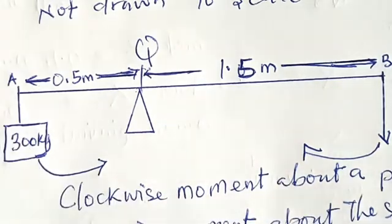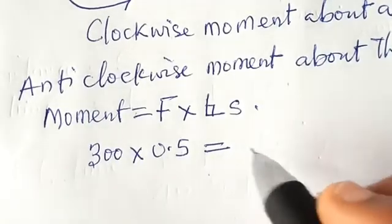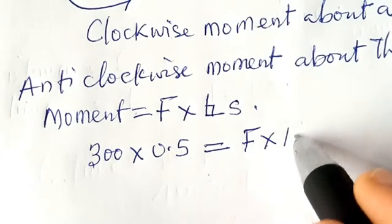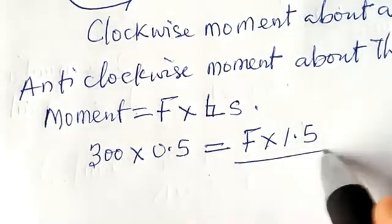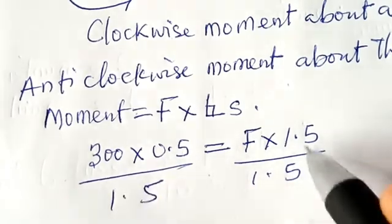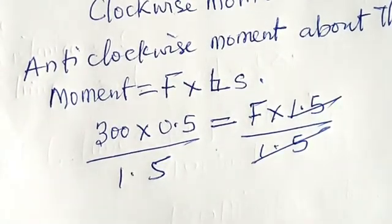We have force multiplied by 1.5. We have to make force the subject of the formula. We divide both sides by 1.5. When we do our normal calculation, 300 multiplied by 0.5 is 150.